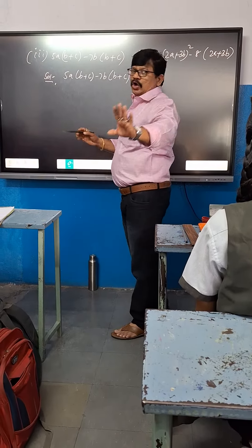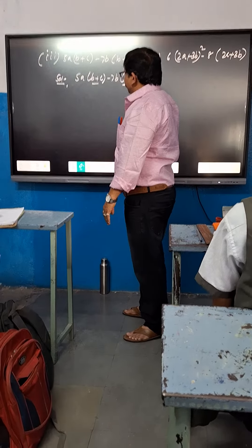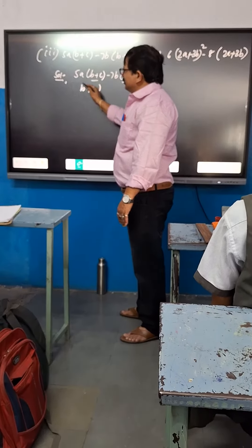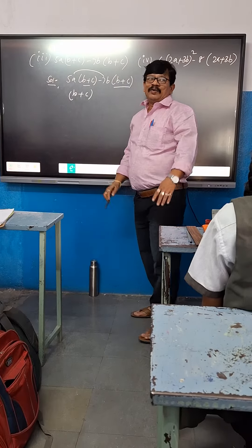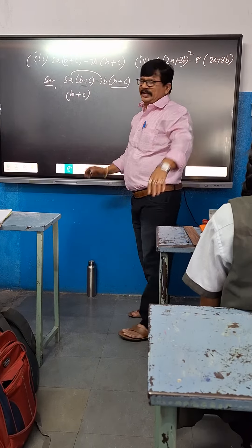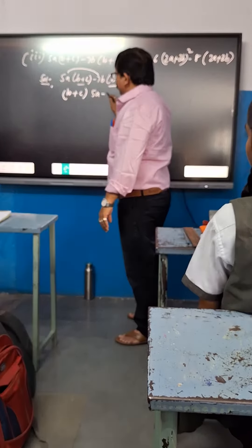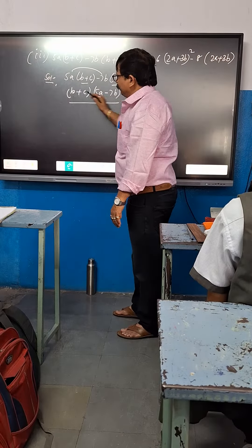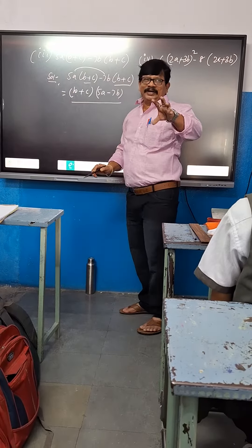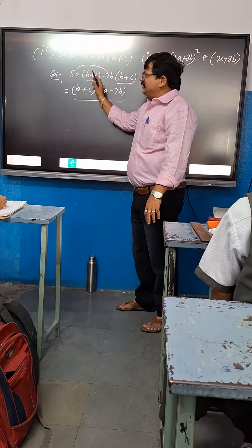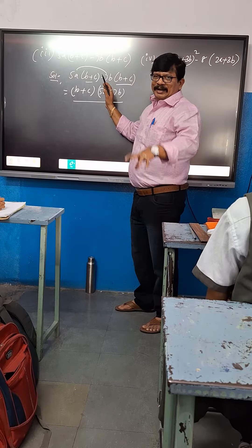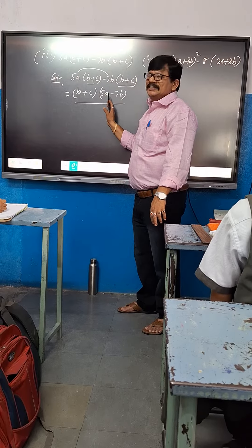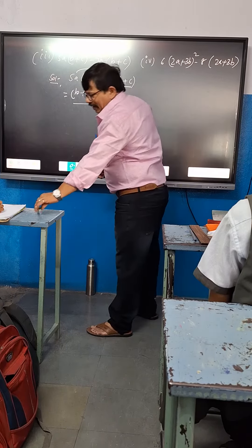Now you know — B plus C, common take. B plus C common take means what? Remaining values: 5A minus 7B. Simple way: take B plus C common, remaining 5A minus 7B.